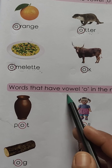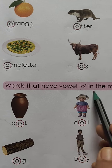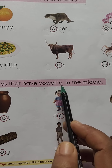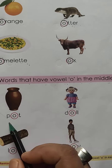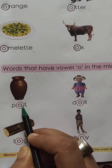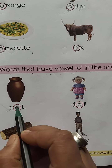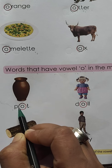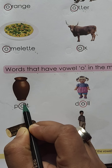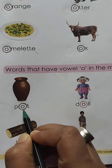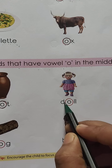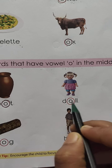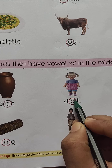Now, words that have vowel O in the middle. Words that have vowel O in the middle — let's start. P O T — pot. Vowel O is in the middle, so circle the vowel O.